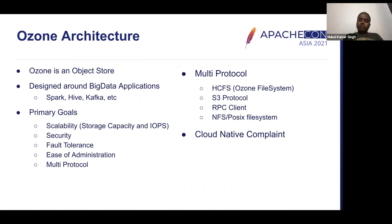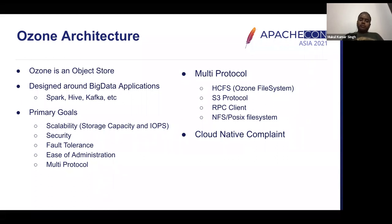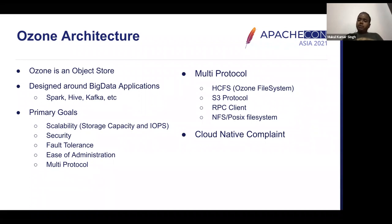Some of the primary goals of developing Ozone was to go beyond the scalability limits of HDFS. We provide significant scalability improvements compared to HDFS NameNode in terms of storage capacity as well as IOPS. We provide Kerberos security, which is the same as how Hadoop security looks like. We are fault-tolerant — you can fail any of the master nodes as well as the data nodes and the system self-corrects itself. We provide ease of administration using a utility called Recon, which we'll talk about later. Ozone has been designed to be multi-protocol, supporting the S3 protocol as well as the Hadoop compatible file system, and the system can be extended to add more protocols as needed.